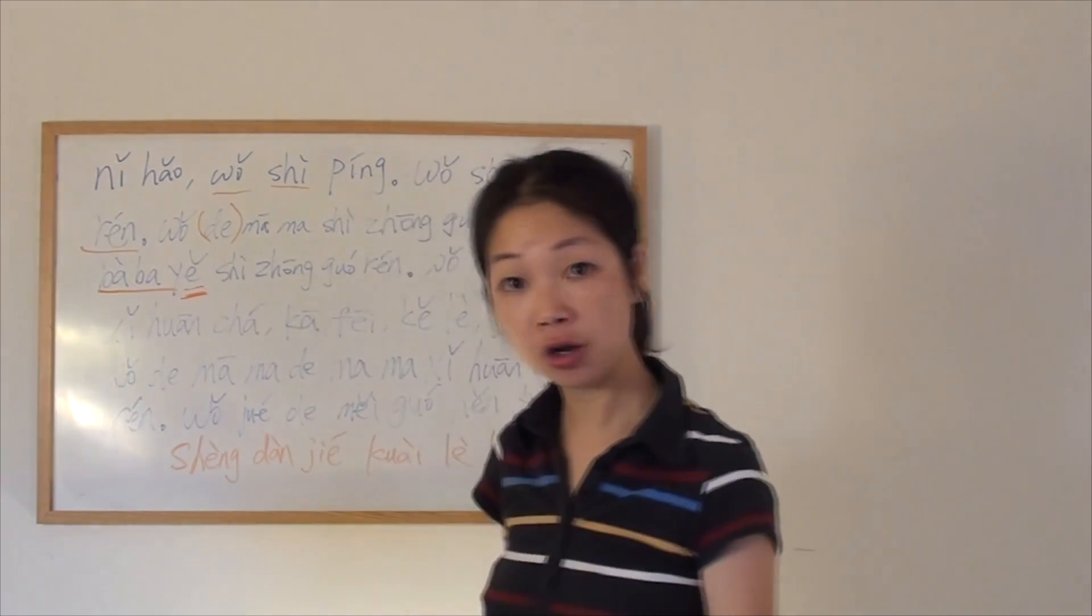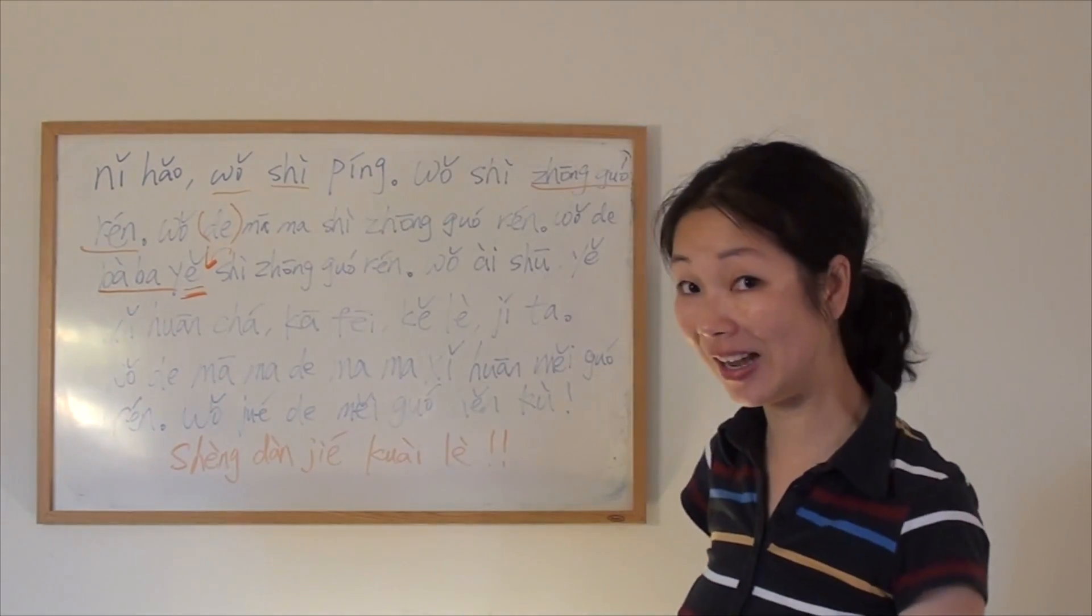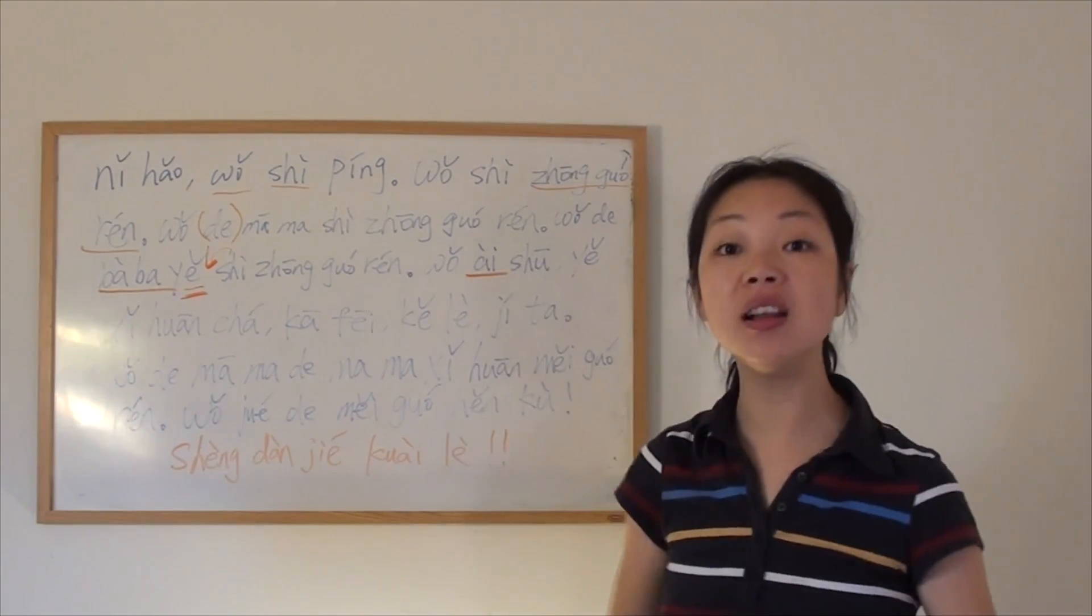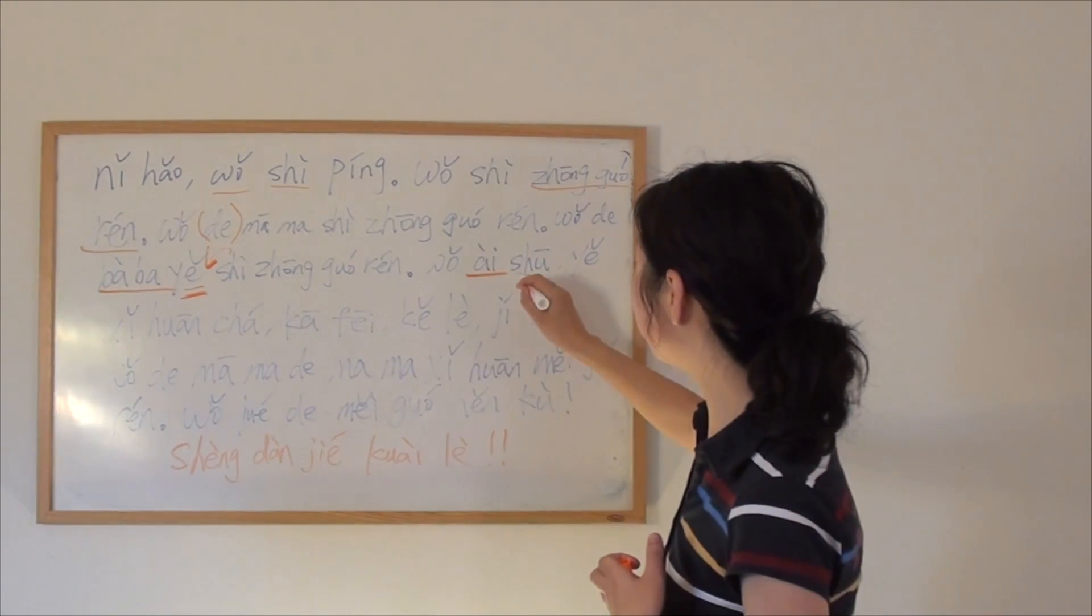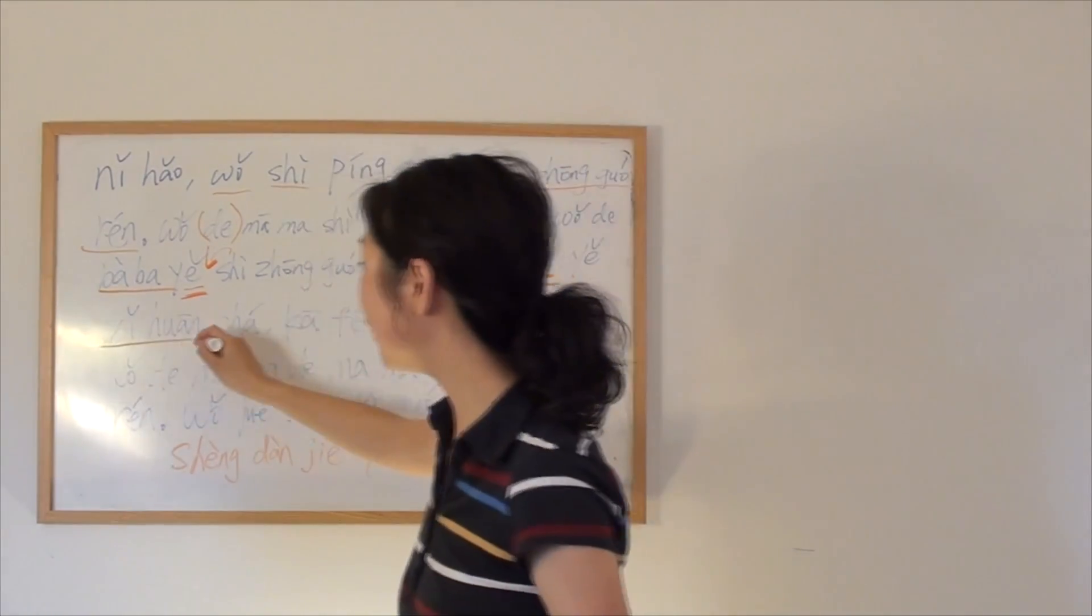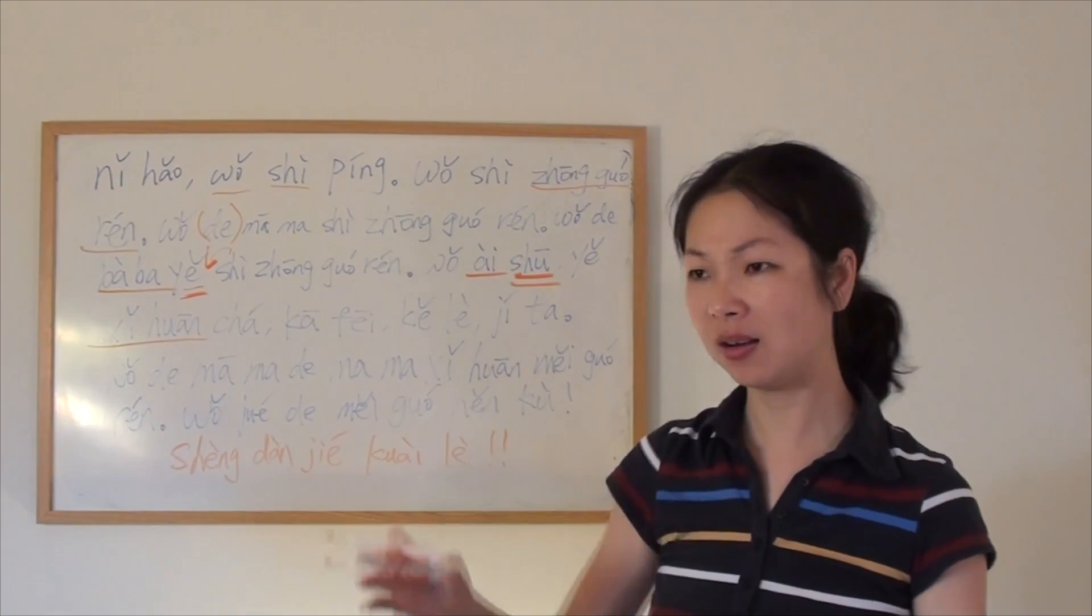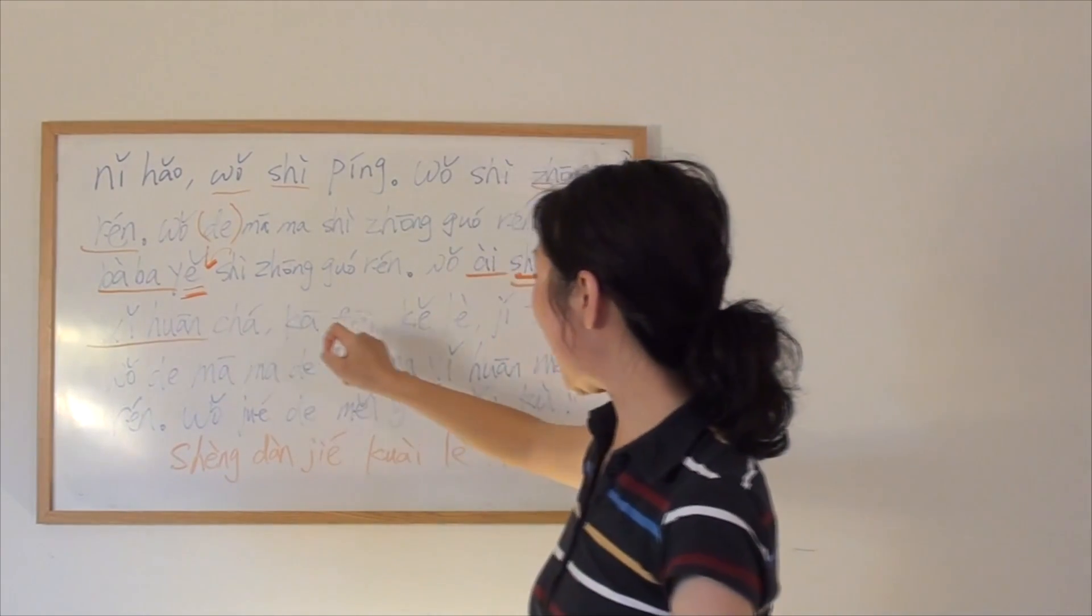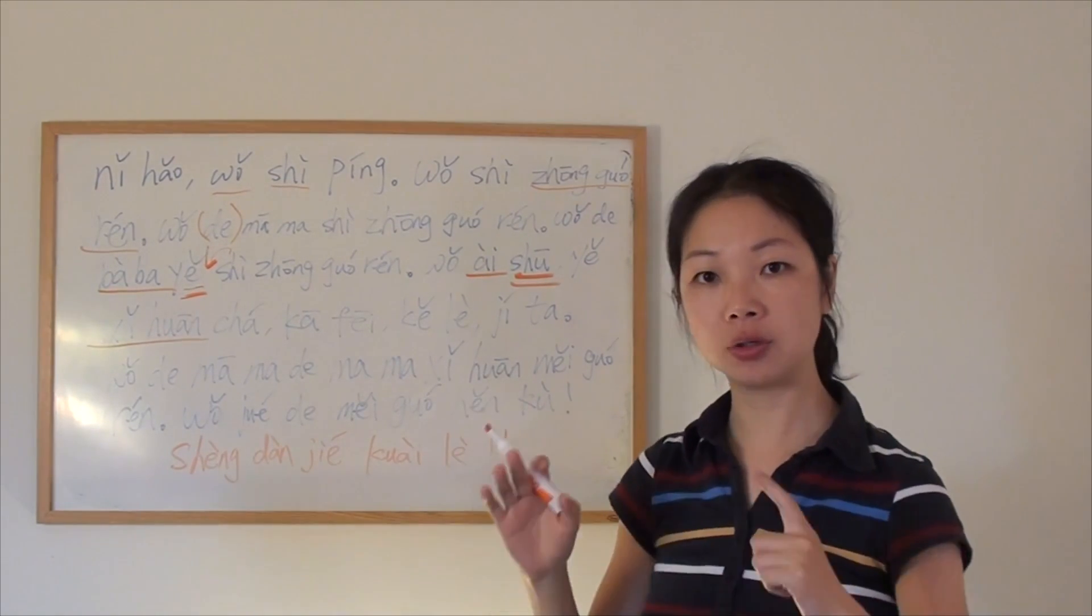也是中国人, 也, also, but remember when we talk about grammar, we always put a 也 before the verb. We never put a 也 at the end of the sentence. 我爱书, love, I love you. Remember the first episode we said 我爱妈妈. 书, books. 也喜欢, 喜欢 to like. After a little 喜欢, I told you, you can express your opinion so easily. I like him, I like books, I don't like that movie. I like that movie. To like 茶，咖啡，可乐，吉他.